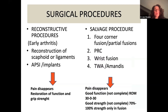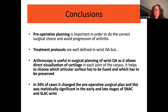In conclusion, surgical procedures can be reconstructive in early stages and salvage in later stages — the choice between them is not always easy. Salvage procedures resolve pain well but still give only 30-40 degrees of flexion and 30 degrees of extension, with good but not always complete strength apart from fusion. Preoperative planning is important to make the correct surgical choice and avoid progression of arthritis. Arthroscopy is useful in surgical planning as it allows direct visualization of cartilage in the carpus and helps choose which joints to fuse and which to preserve. In total, 34% of cases had a change in the preoperative surgical plan, which was statistically significant in early stages of SNAC and SLAC wrist.